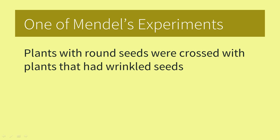In his experiments, Mendel placed the pollen, or male gamete of the plant, on top of the pistil, which contains the female gamete, by hand pollinating the plants. In the seed form experiment, Mendel crossed plants with round seeds with plants that had wrinkled seeds.